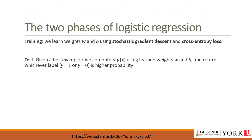In logistic regression there are two phases. In the training phase, we train the system — specifically the weights w and bias b — using stochastic gradient descent and the cross-entropy loss. In the test phase, given a test example x, we compute the probability of y given x and return the highest probability label, either y equals 1 or y equals 0.